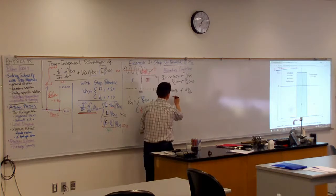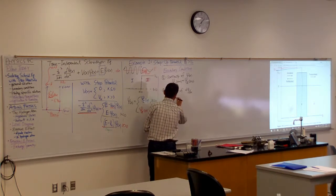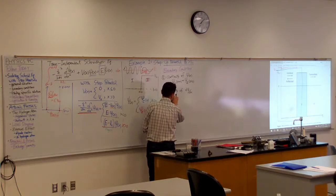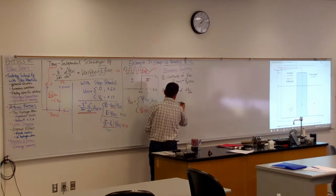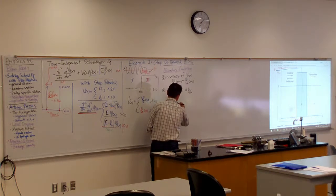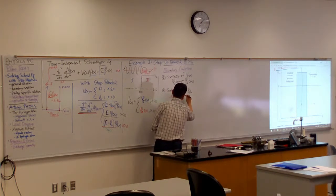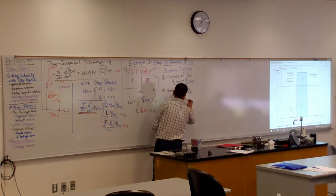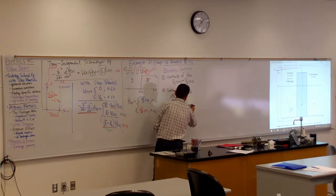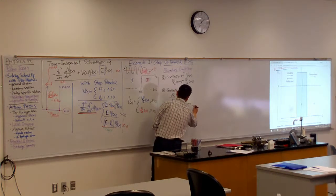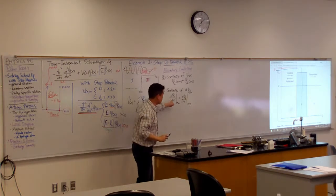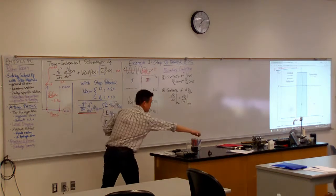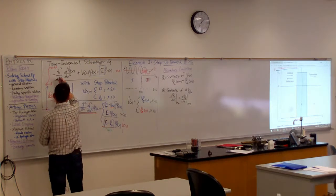Or writing it out, it would be derivative of psi 1 with respect to dx at x equals 0 is equal to derivative of psi 2 with respect to x at x equals 0. And this is actually a lot easier to explain simply using Schrödinger equation here.